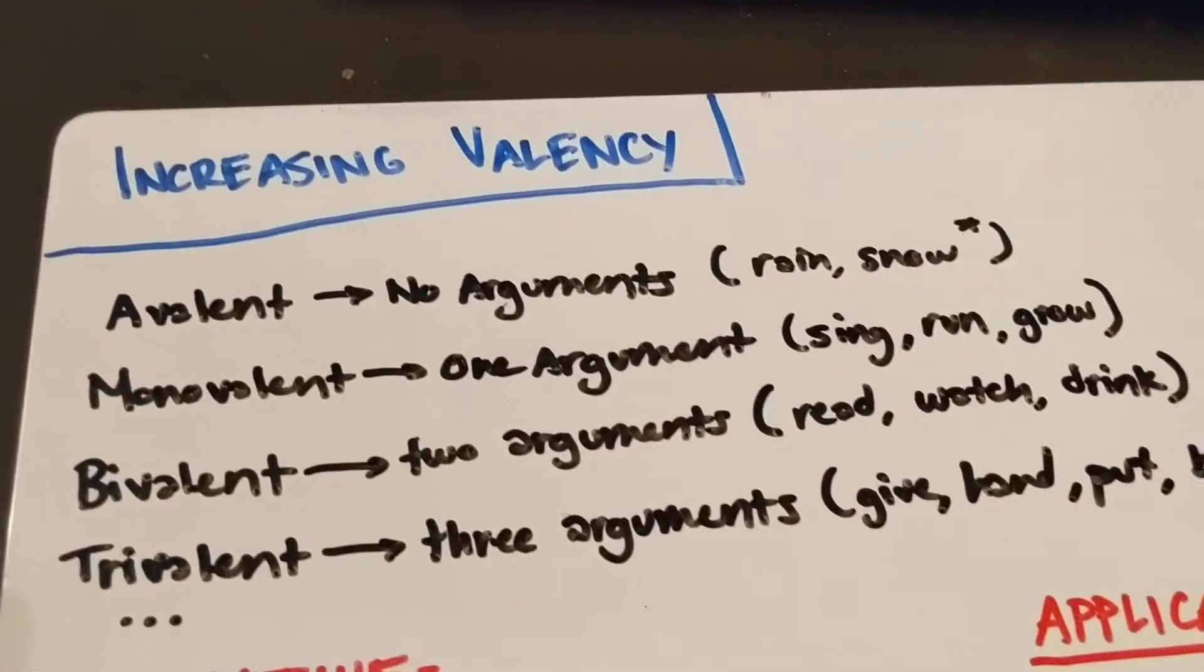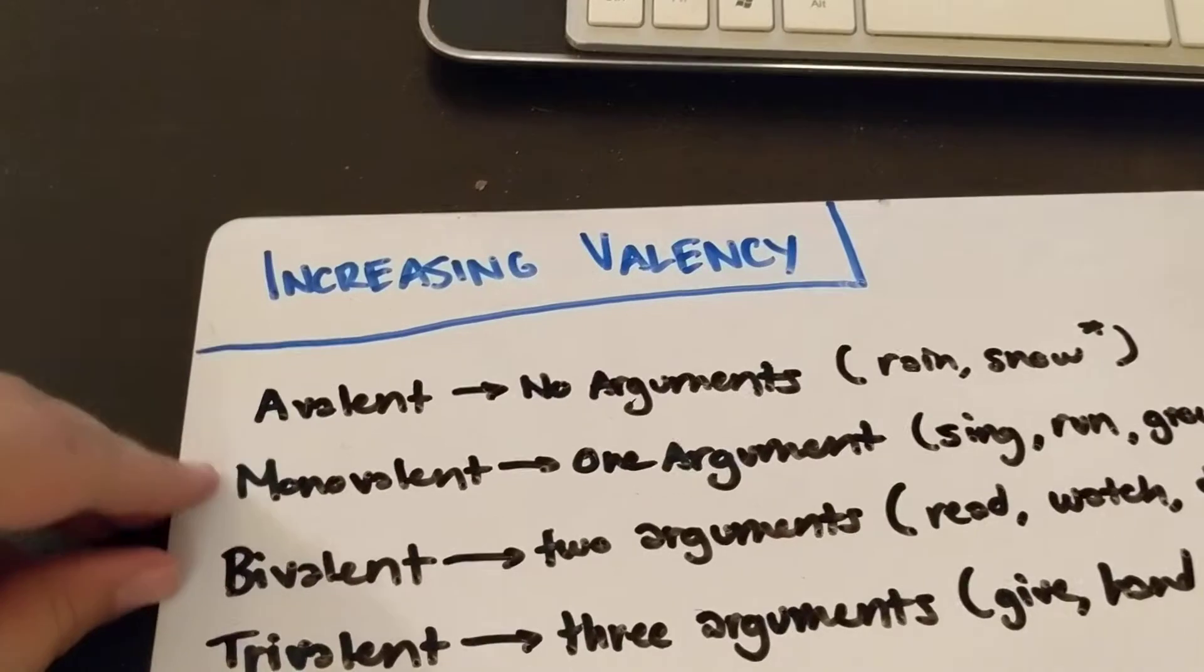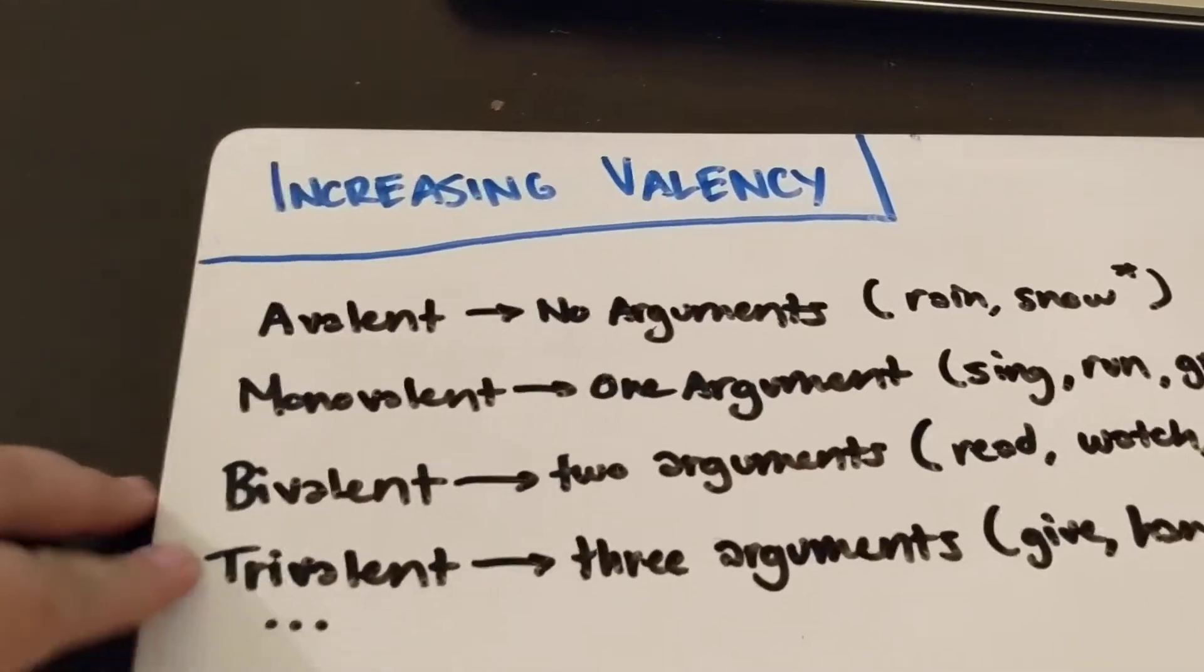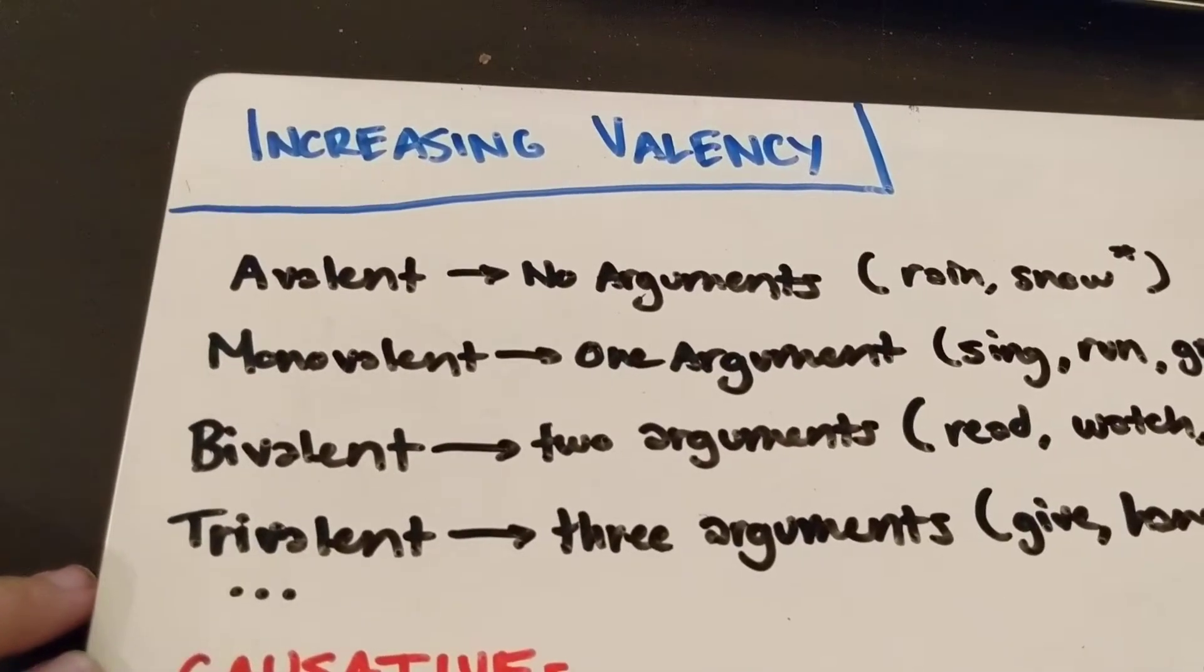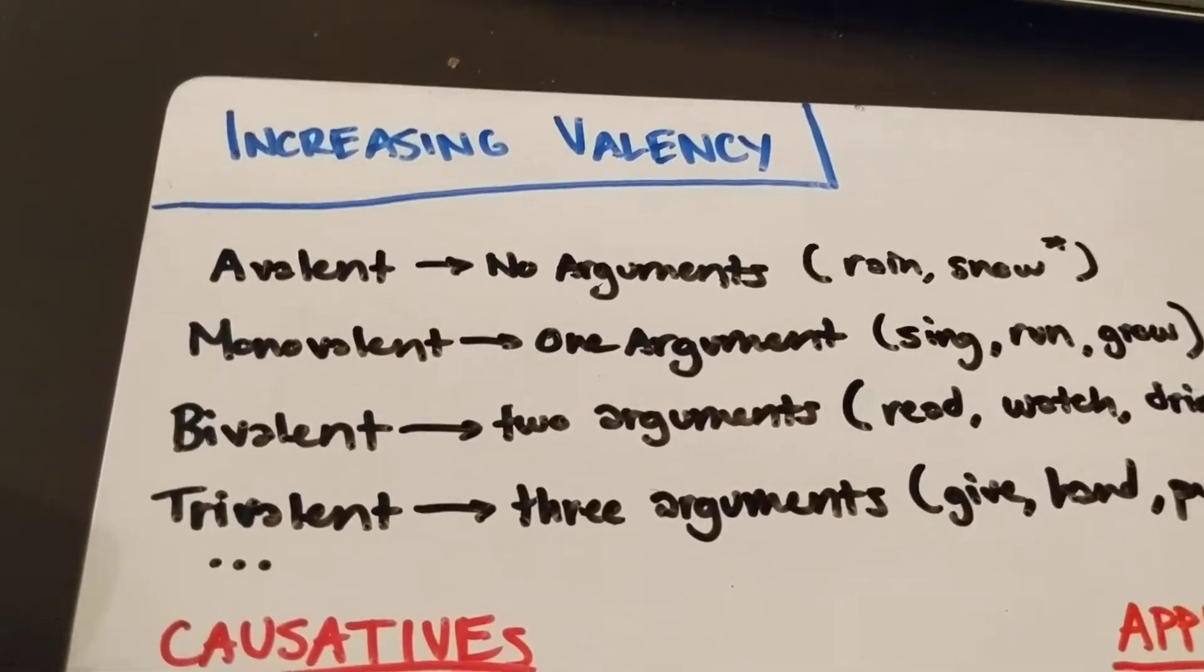Essentially, valency is the number of arguments that a verb takes. So a verb can be avalent, monovalent, bivalent, trivalent, quadrivalent, I guess it would be quinvalent. You can just keep going up counting, right?